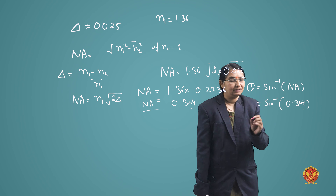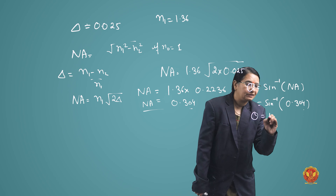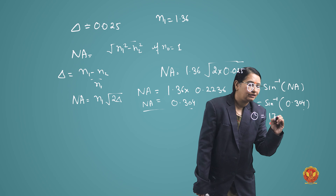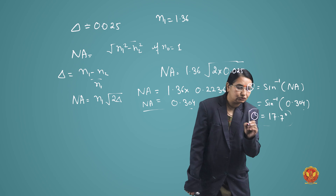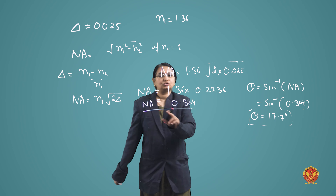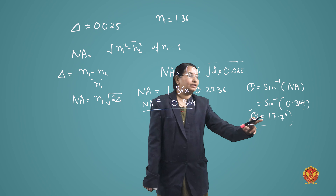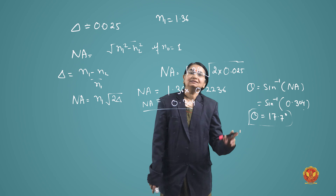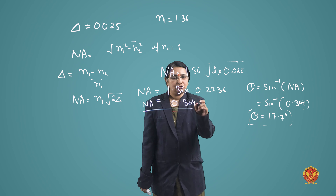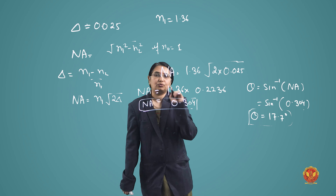So theta is approximately equal to 17.7 degrees. These two parameters — the numerical aperture and the acceptance angle — are the values we have found here.